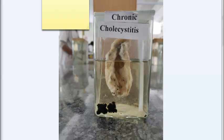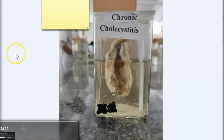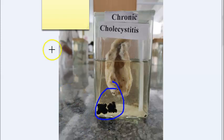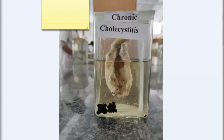Chronic cholecystitis — the gallbladder wall is thick, the gallbladder will be contracted as it's a chronic condition, there is fibrosis of the wall, the cut section will be gray-white, and mucosal folds are thickened, atrophied, and flattened. You can see black stones — bile stones which are mulberry-shaped. Multiple stones will be there. In microscopy you will see Rokitansky-Aschoff sinuses, chronic inflammatory cells, and fibrosis.